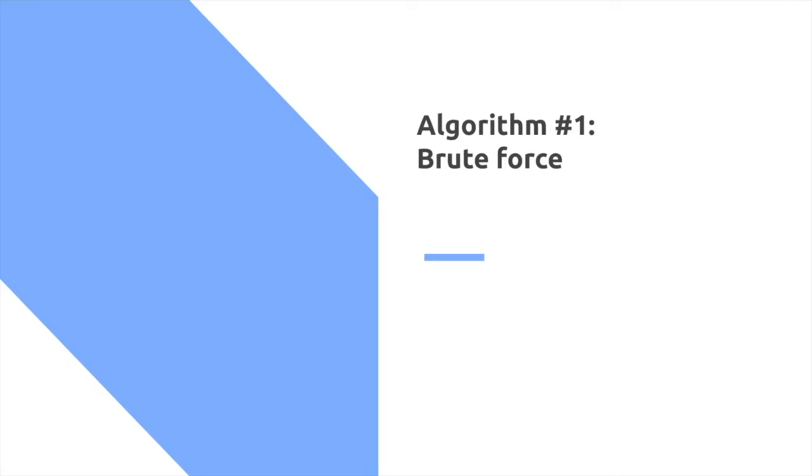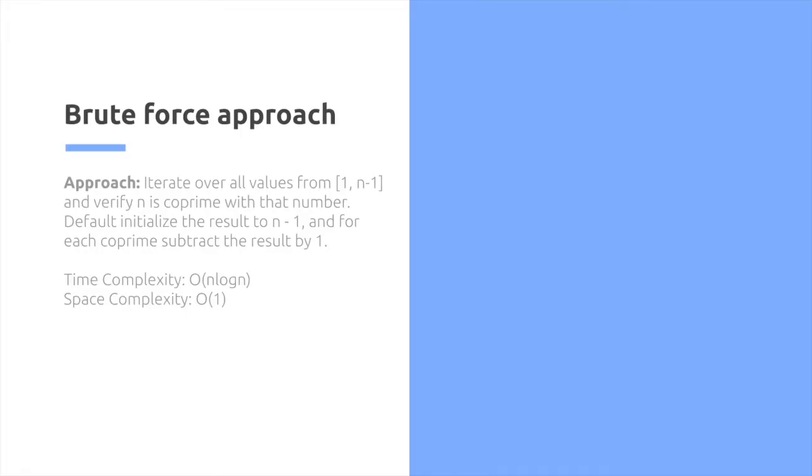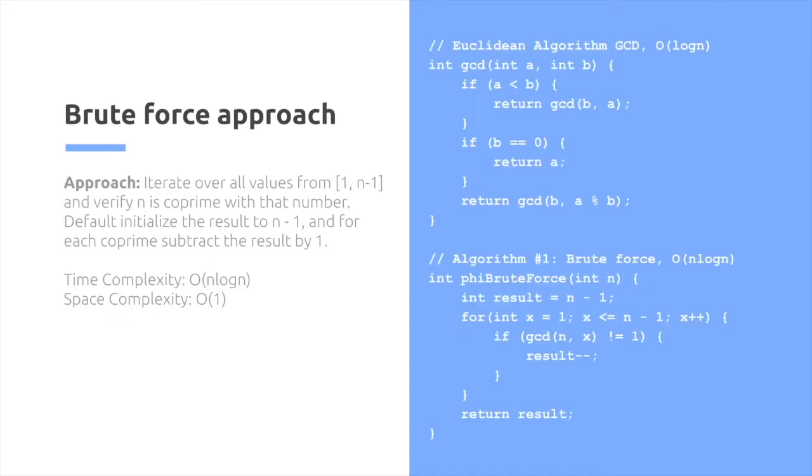So what is our first algorithm approach? We're going to try brute force. We're going to iterate over all the values from 1 to n-1, and verify if n is coprime with that number. Default initialize the result to n-1, and for each coprime, subtract the result by 1. So the time complexity of this will be O of log n, with no additional space complexity.